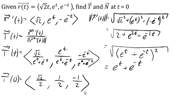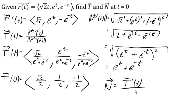Now to find the unit normal vector, we're going to need to take the derivative of the unit tangent vector, because the unit normal vector is the derivative of the unit tangent vector divided by the magnitude of that derivative. So now we need to take the derivative of that unit tangent vector.